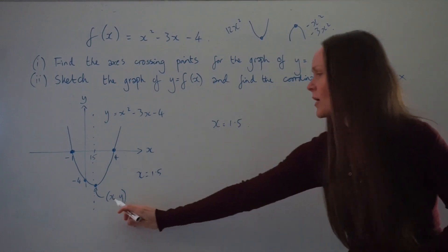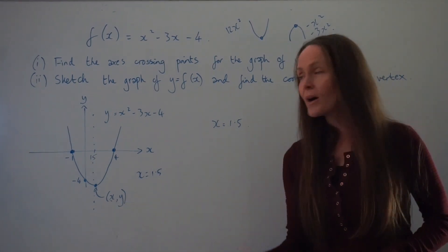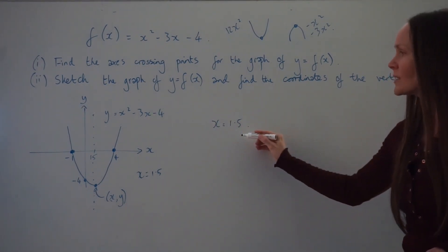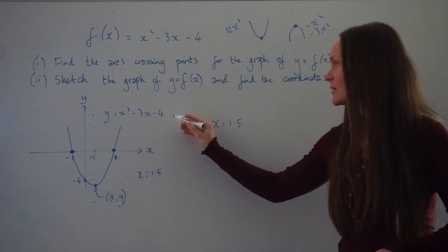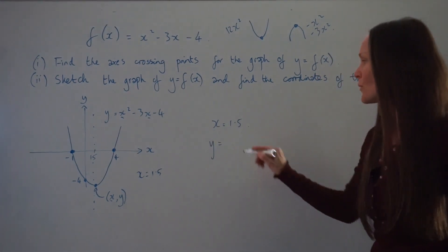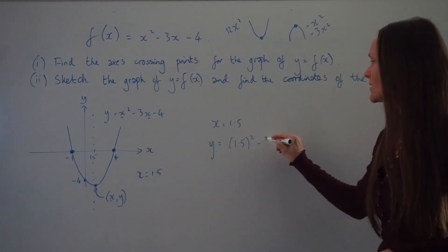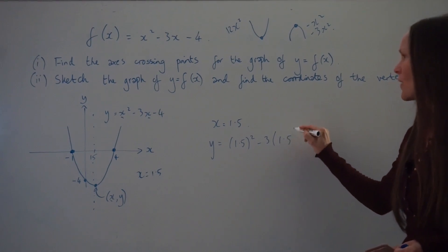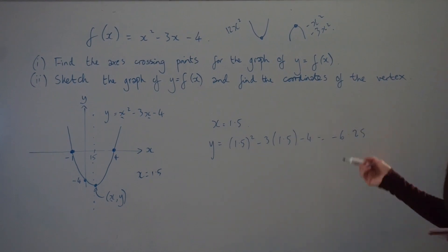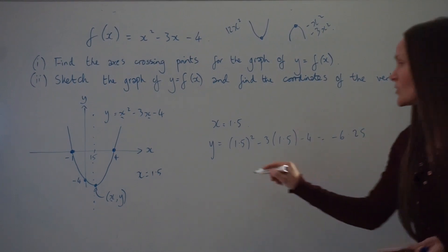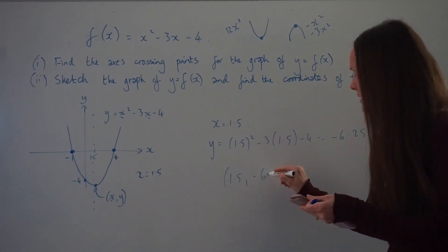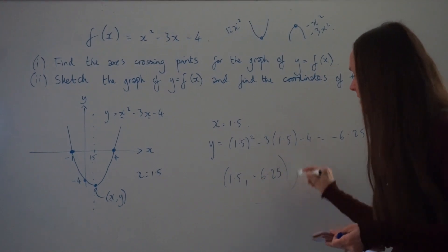To find the y-value corresponding to x = 1.5, substitute it into the equation: y = (1.5)² - 3(1.5) - 4 = -6.25. So the vertex has coordinates (1.5, -6.25). That is method 1.